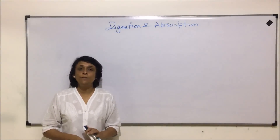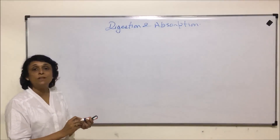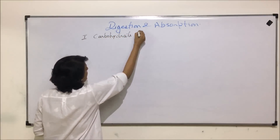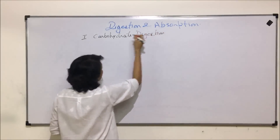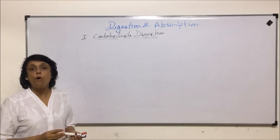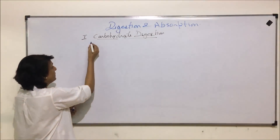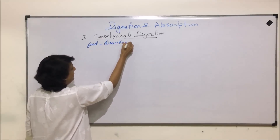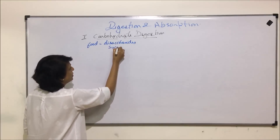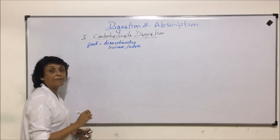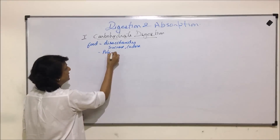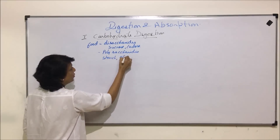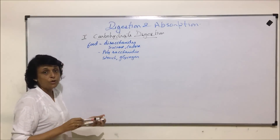From this section we are starting with the process of digestion, beginning with carbohydrate digestion. We need to understand in which form carbohydrates are normally consumed. Food contains carbohydrates in the form of disaccharides like sucrose and lactose, and polysaccharides like starch, glycogen, and cellulose — which we call roughage.